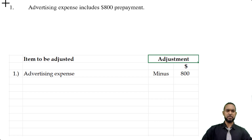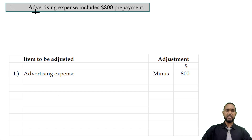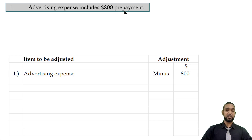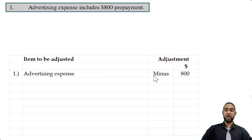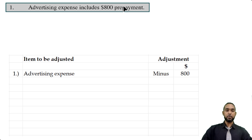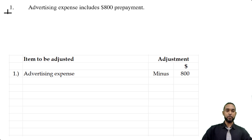Let's go back to the first adjustment. It says advertising expense includes an $800 prepayment. A prepaid expense is an expense paid in advance of being incurred, so it does not apply to the current period's profit calculation. We subtract the prepaid amount, so we see advertising expense minus $800, which is the prepaid amount. So we kind of know what we have to do; let's go to the second item.